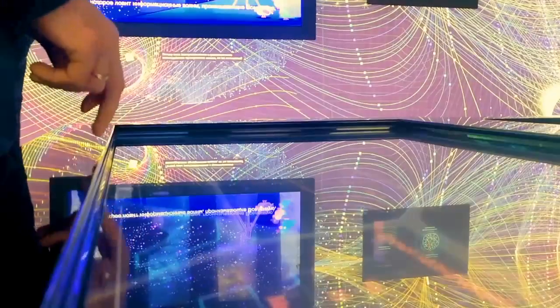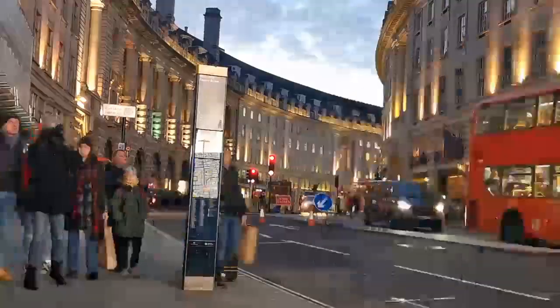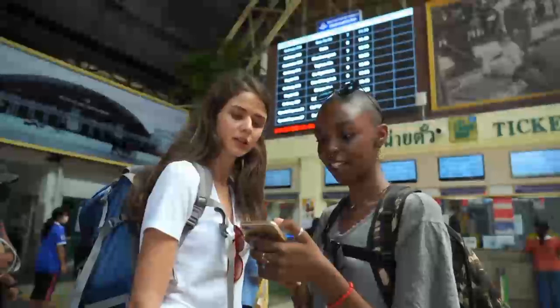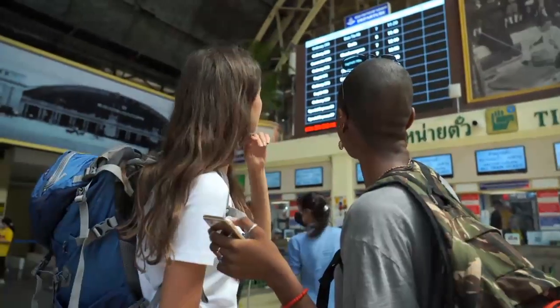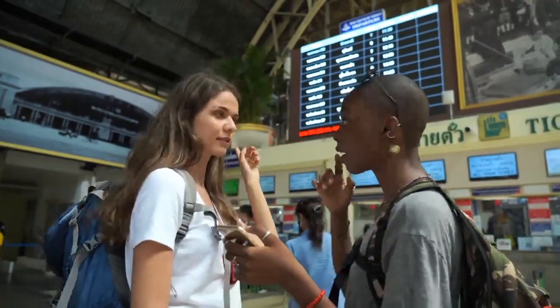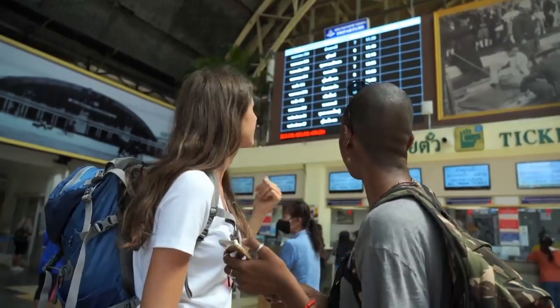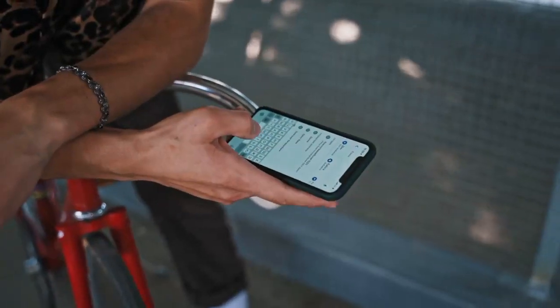TRAPPIST-1 planets: the seven Earth-sized planets in the TRAPPIST-1 system, located about 40 light years away, have also sparked interest. Three of these planets, TRAPPIST-1 E, F, and G, reside in the system's habitable zone. One model suggests they could host liquid water under suitable atmospheric conditions.